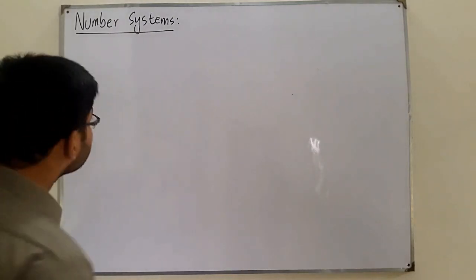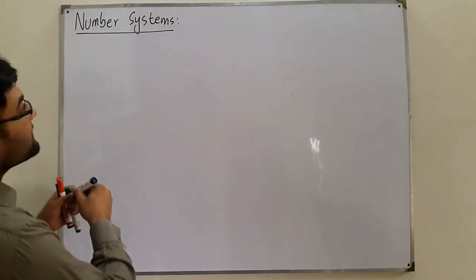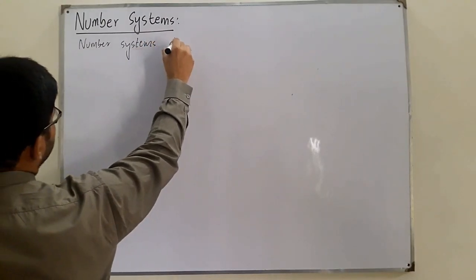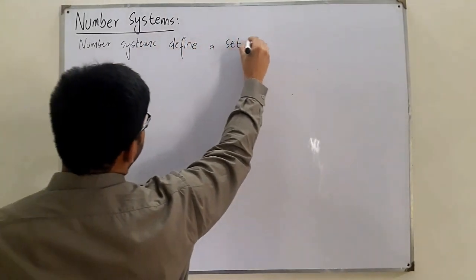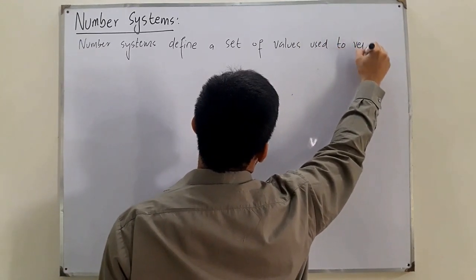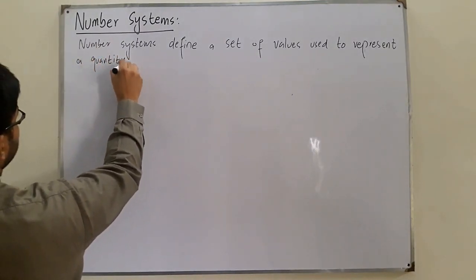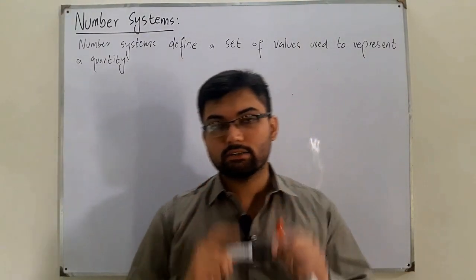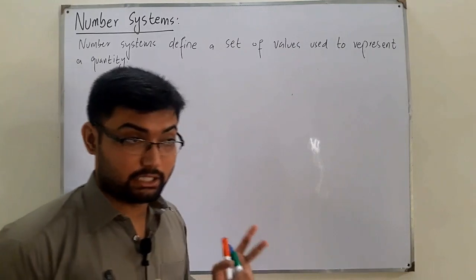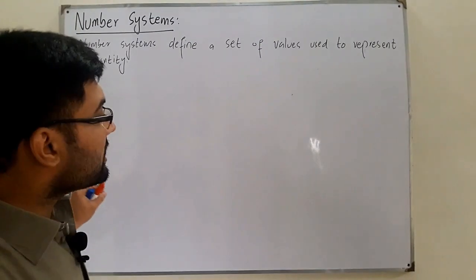This is an introduction to number systems. So the basic definition: number systems define a set of values used to represent a quantity. What does this mean? It means we use numbers to represent a quantity.